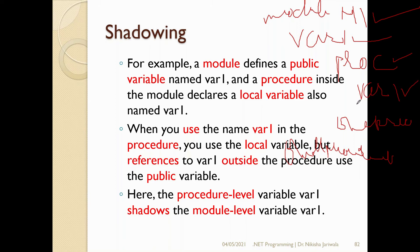Now, whenever we want to access the VAR1 variable inside the procedure, the compiler will first look for that element in the closer scope — that is, inside the procedure itself. It will check whether VAR1 is declared there. If VAR1 is found in that closer scope, the compiler will reference that VAR1. But if it is not found there, it will then look outside the procedure, and find the public VAR1 in module M1 and execute that.